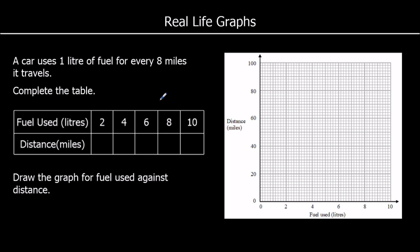So for 2 litres, it's 2 times 8, which is 16 miles. For 4 litres, 4 times 8, which is 32. For 6 litres, it will be 6 times 8, so that will be 48 miles. For 8 litres, 64 miles. And for 10 litres, 80 miles. So the distance that a car can travel is 8 times the number of litres of fuel it's got.